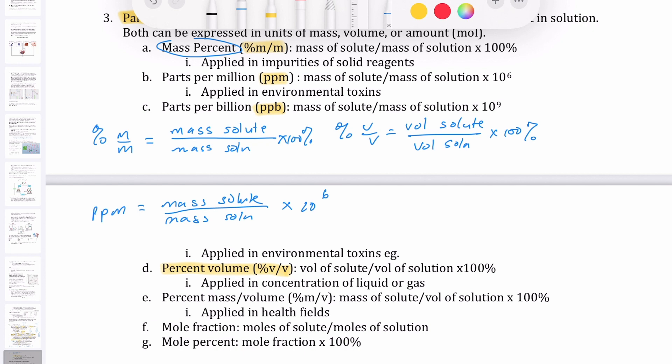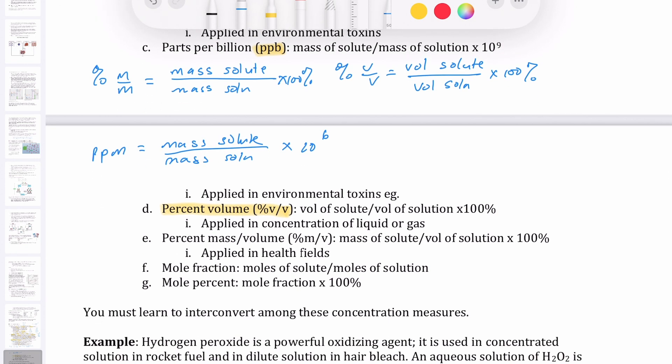So that's the only difference. And the reason they're multiplied by those numbers is because the concentration is so small. If you're just dividing mass of solute over mass of solution, that you need to multiply it by a bigger number to get to a number that is meaningful to us.